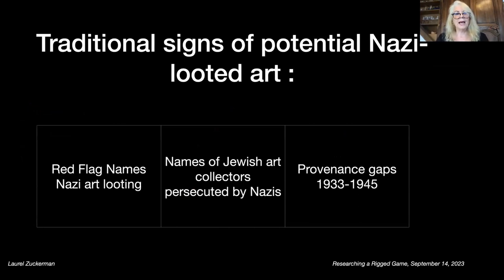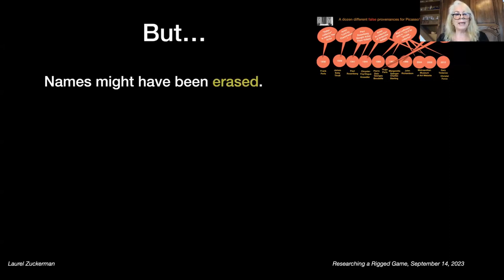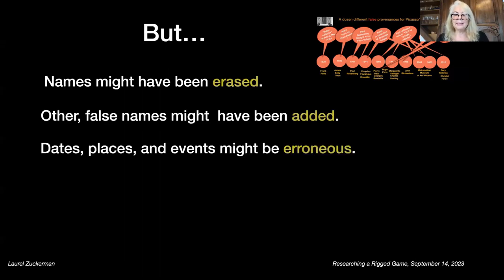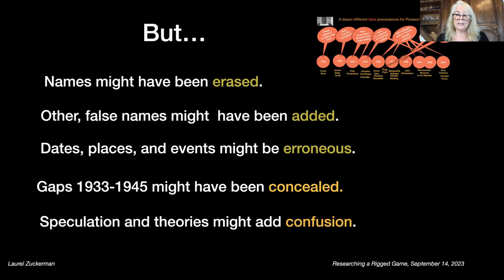Why are these kinds of words important? Because traditional signs of Nazi-looted art that we look for are red flag names — for example, the thousand names inventoried in 1946 of individuals involved in the Nazi looted art trade, or names of Jewish art collectors who had been persecuted. However, my own personal experience indicated that quite often these provenances omit these names or falsify them. Names might have been erased, false names added, dates and places made erroneous, gaps concealed, and speculation used to add confusion. So if you just trust the words in the provenance, you're in trouble.